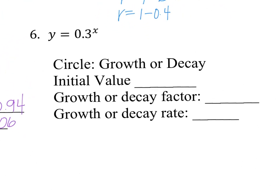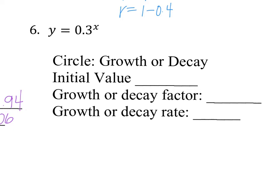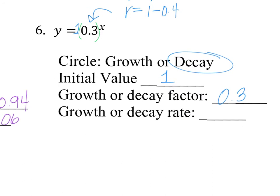Number 6 is a little bit tricky. Number 6 doesn't have an obvious number in the front. If it doesn't have an obvious number in the front, there's a secret 1. Looking at growth or decay, b is 0.3, so it is between 0 and 1 — it's going to be decay. My initial value, being that I didn't see anything, is actually going to be 1. My decay factor is 0.3. For the decay rate, since it is decay, r equals 1 minus b, so r equals 1 minus 0.3, which equals 0.7 as my decay rate.